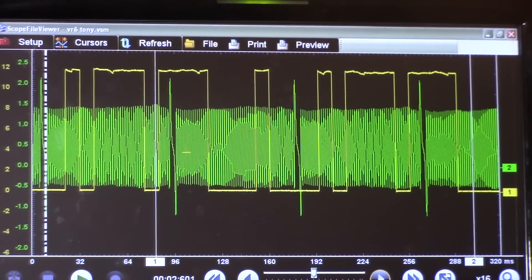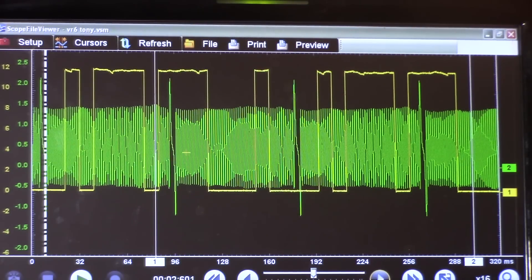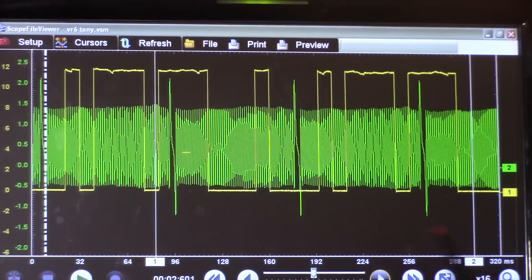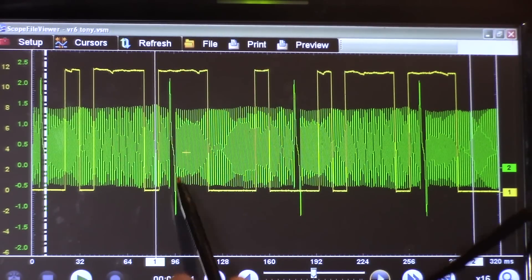All right guys, I have the saved waveform from Tony's car, our cam and crank. Yellow trace is my cam signal. Green trace is my crank signal. And in between my two cursors, I have 720 of the crank. Two rotations of the crank is one rotation of the cam. So I want to focus on this first crank sync.